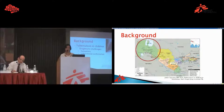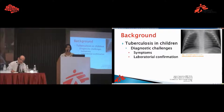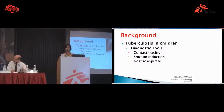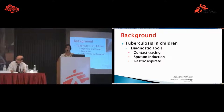Uzbekistan is one of the 27 countries of the world with high burden of MDR-TB, multidrug-resistant TB. This high burden is also expected within the pediatric population, because most often they will get this disease within their own houses or with adults they are in close contact with.